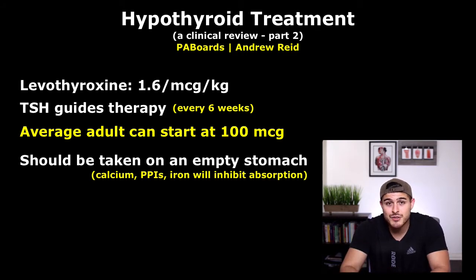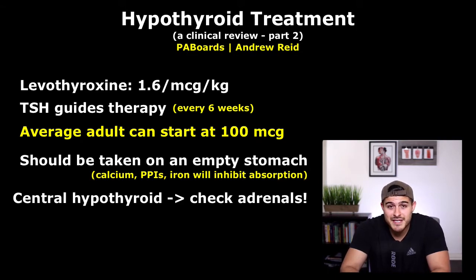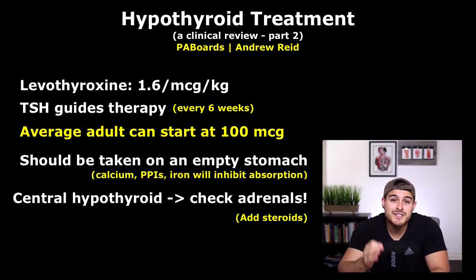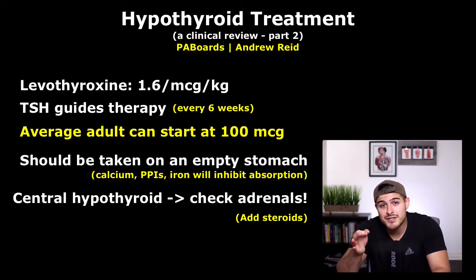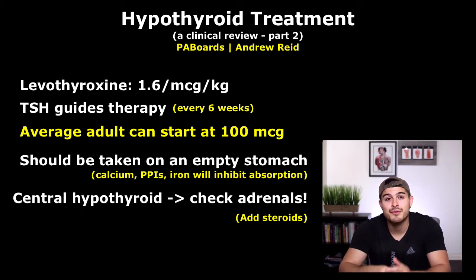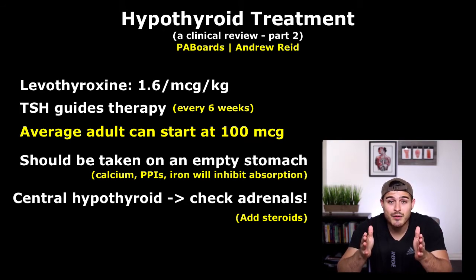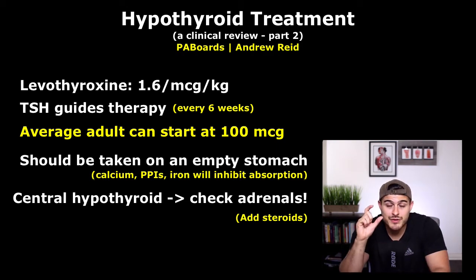For central hypothyroidism, before starting levothyroxine we must perform an adrenal function test with ACTH stimulation. If adrenal insufficiency is present, glucocorticoids must be given alongside levothyroxine to avoid precipitating an adrenal crisis. Dosing in central hypothyroidism is the same as in primary hypothyroidism, but these patients are assessed with free T4 rather than TSH, since they are not producing TSH appropriately and that value is not helpful for guiding dosage adjustments.